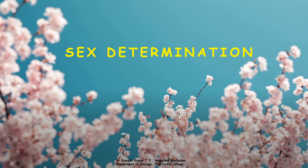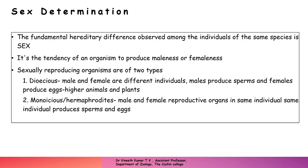These are the topics that will be discussed under sex determination. The fundamental hereditary difference observed among individuals of the same species is sex, because organisms are morphologically similar or genetically identical, yet in that morphological similarity, males as well as females in dioecious organisms have a different pattern. It is a tendency of an organism to produce maleness or femaleness.